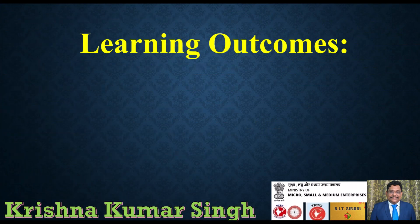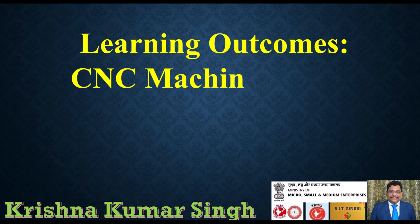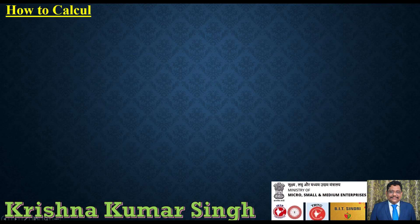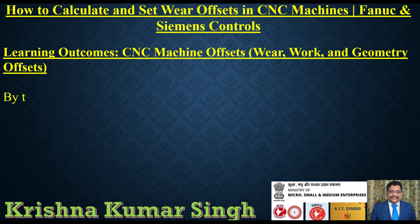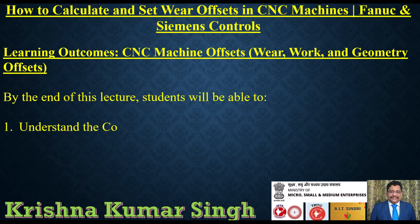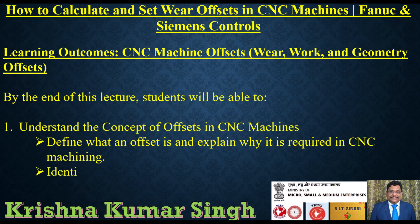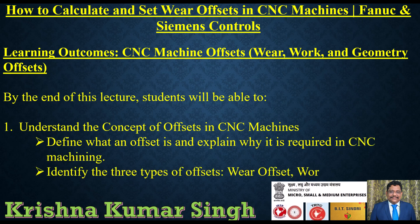Here are the learning outcomes: CNC machine offsets — wear and geometry offsets. By the end of this lecture, students will be able to: one, understand the concept of offsets in CNC machines, define what an offset is and explain why it is required in CNC machining, and identify the three types of offsets — wear offset, work offset, and geometry offset.